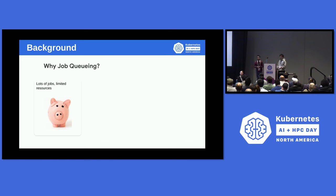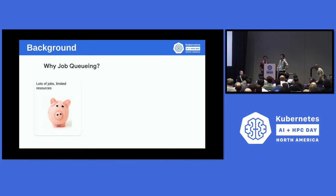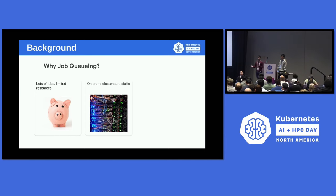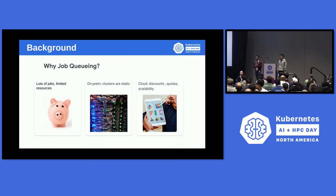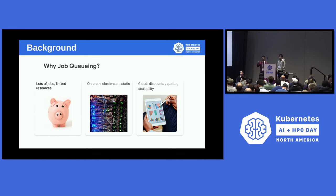In this world we have too many jobs, and as we have heard in the previous talks, there are limited resources — GPUs are scarce, TPUs are scarce. If you're running on-prem, you have a fixed amount of resources and you cannot scale up. But if you're in the cloud, you are competing with other customers who all want GPUs and accelerators. You might get discounts, so you want to manage your discounts and of course you want to scale.